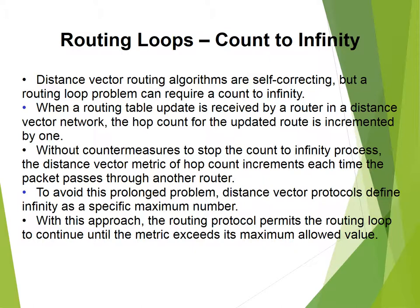The distance vector routing algorithm is self-correcting, but a routing loop problem can require a count to infinity. When a routing table update is received by a router in a distance vector loop, the hop count for the updated route is incremented by one without a countermeasure to stop the count to infinity process. The distance vector metric increments each time the packet passes through another router. To avoid this problem, the distance vector protocol defines infinity as a specific maximum number, and the routing loop is permitted to continue until the metric exceeds that maximum allowed value.